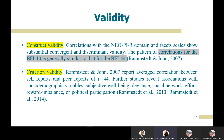For criterion validity, Ramstead and John reported an average correlation between self-report and peer reports of 0.44. Overall, BFI-10 shows very good validity numbers, so we can assume this inventory is both valid and reliable to use. Thank you — I will pass to the next presenter.